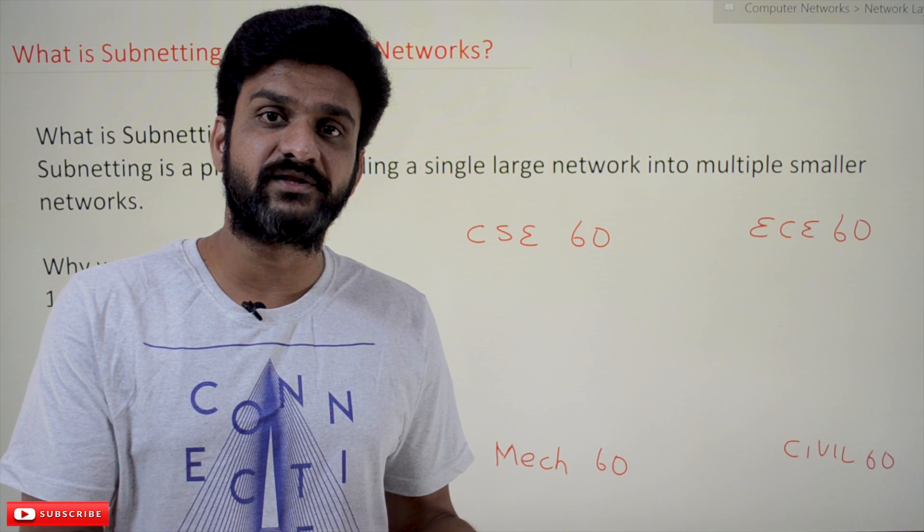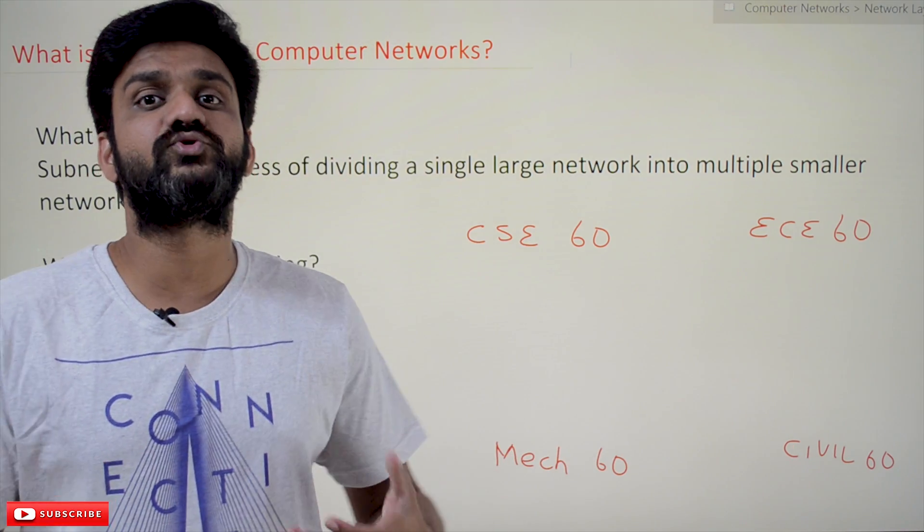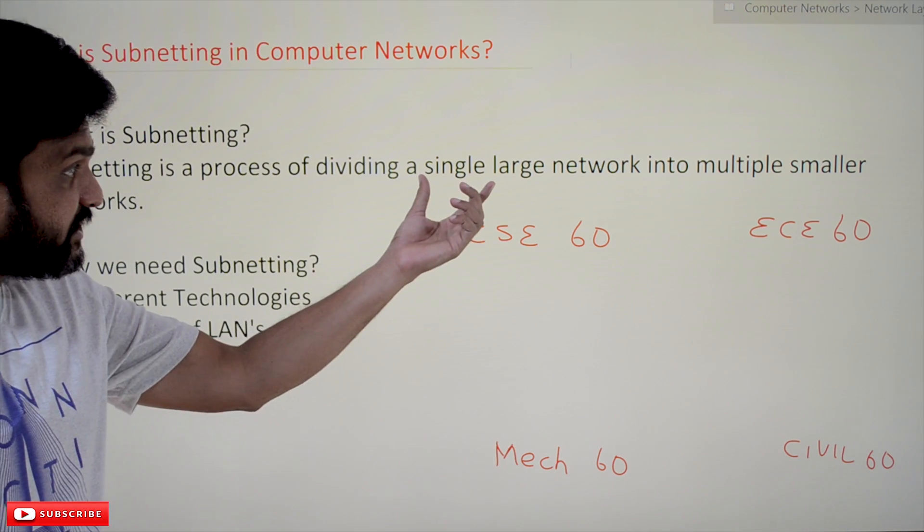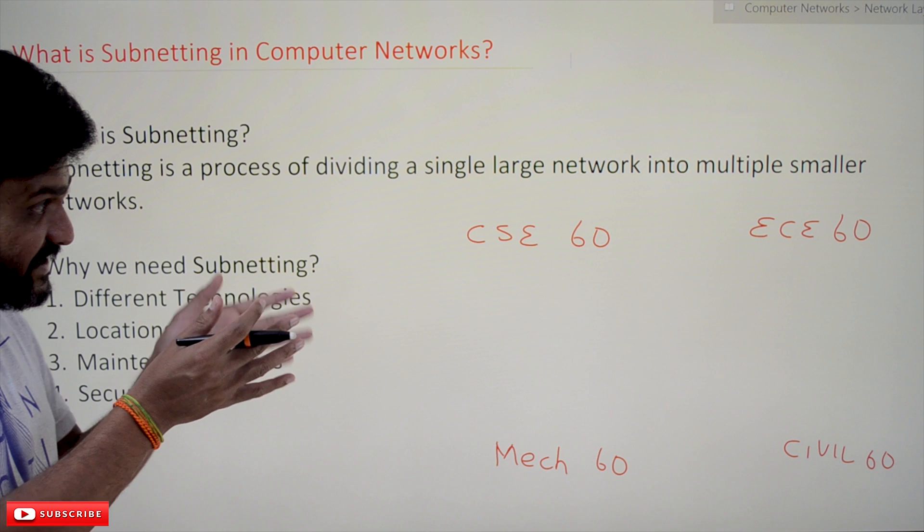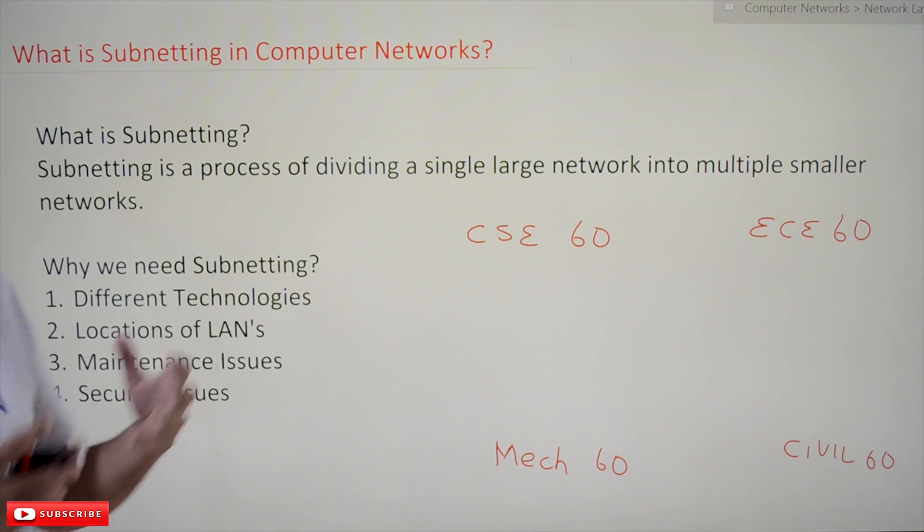So, as we have the possibility of different combinations of networks, why do we need to do subnetting? Why do we need to divide that single network into multiple smaller networks? What is the need of subnetting?